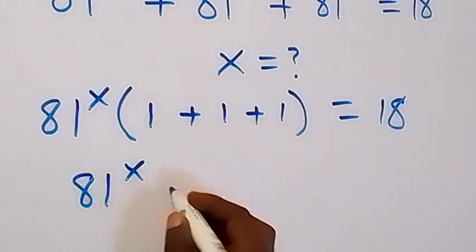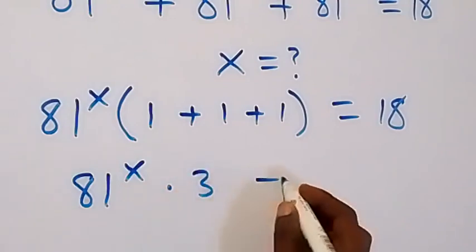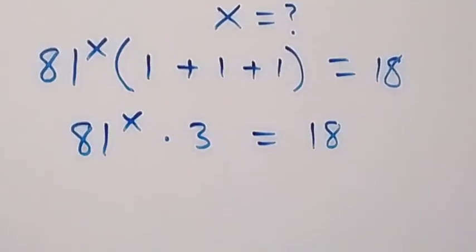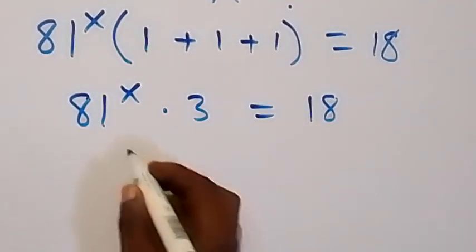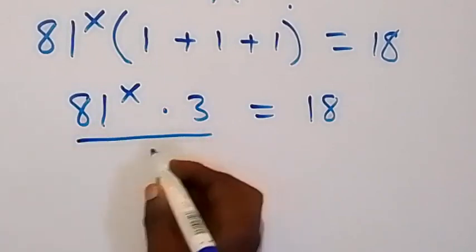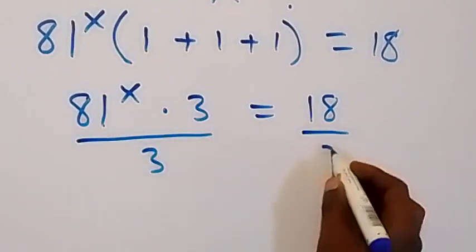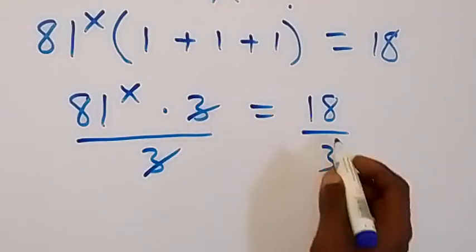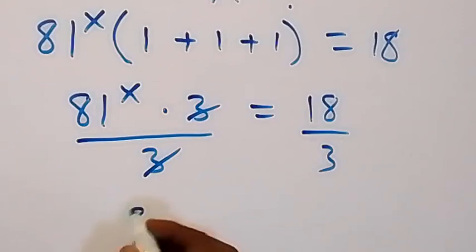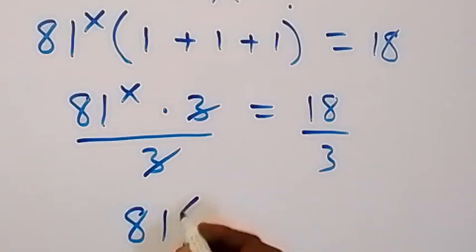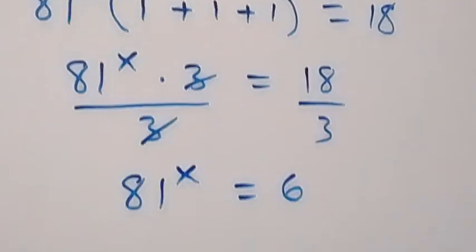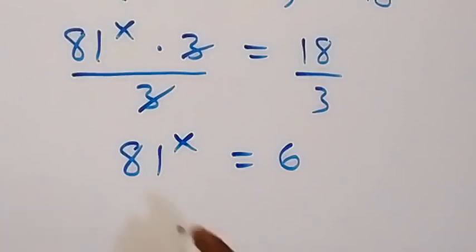We have 81 raised to power x times 3 equals 18. Next step, let's divide both sides by 3 — we divide this side by 3 and this side by 3. The 3s cancel, and 18 divided by 3 is 6, so we have 81 raised to power x equals 6.